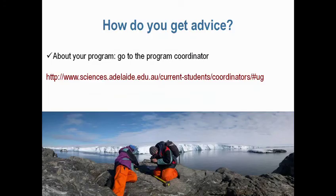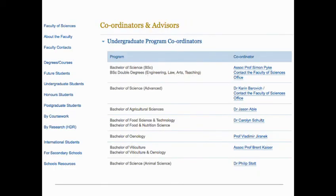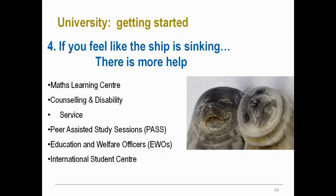The same applies for programs. If you want to talk to somebody about your program — for example, advice on career pathways — contact the program coordinator. At that link you'll find them all listed. If you're in food science and technology, for instance, you could get Carolyn Schultz's contact information.